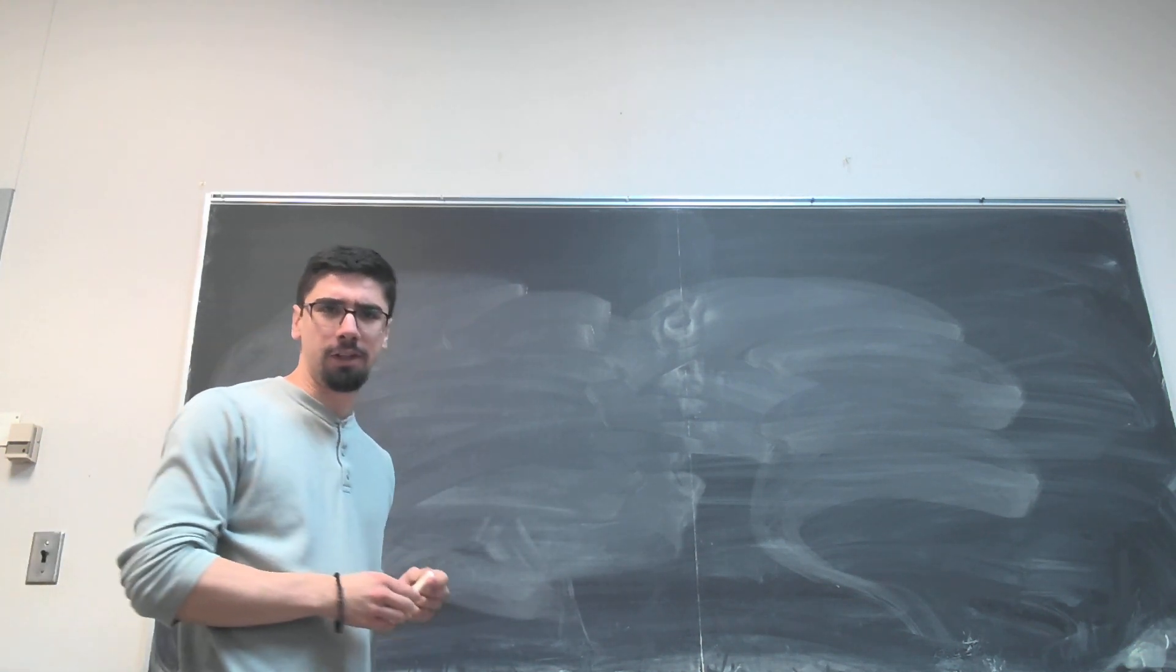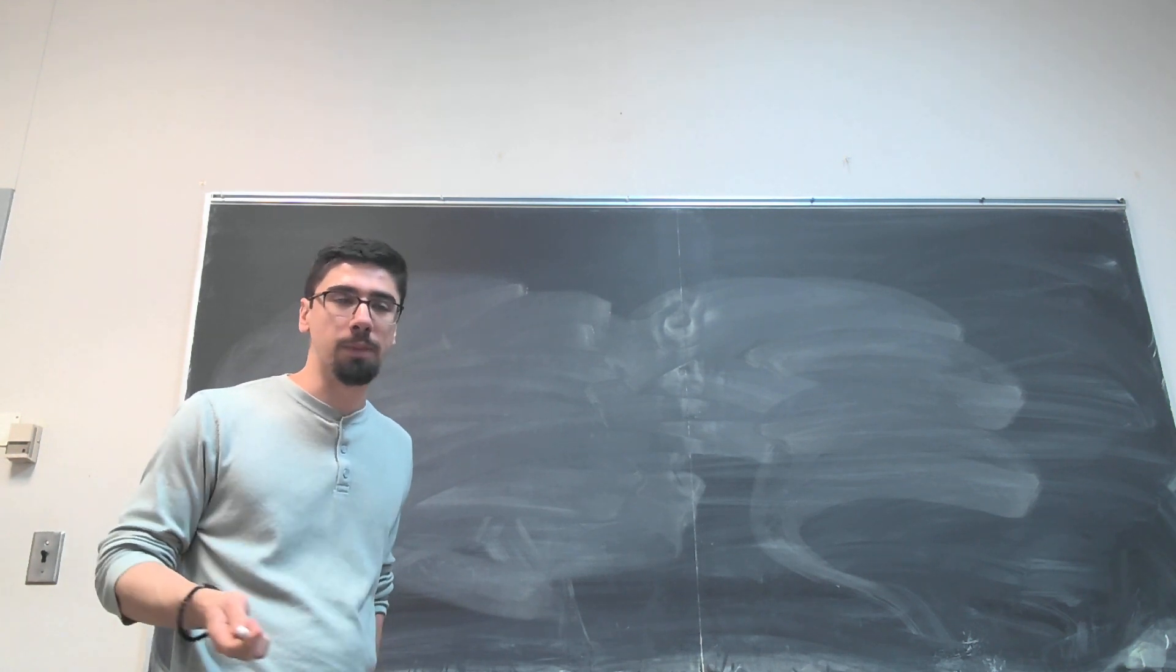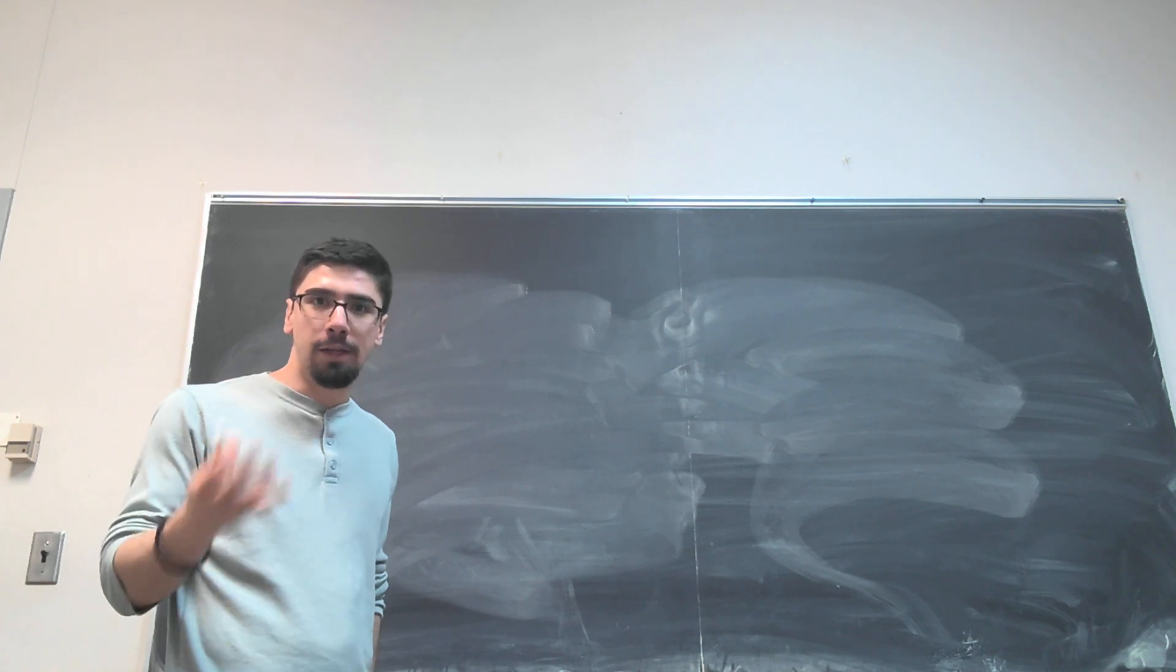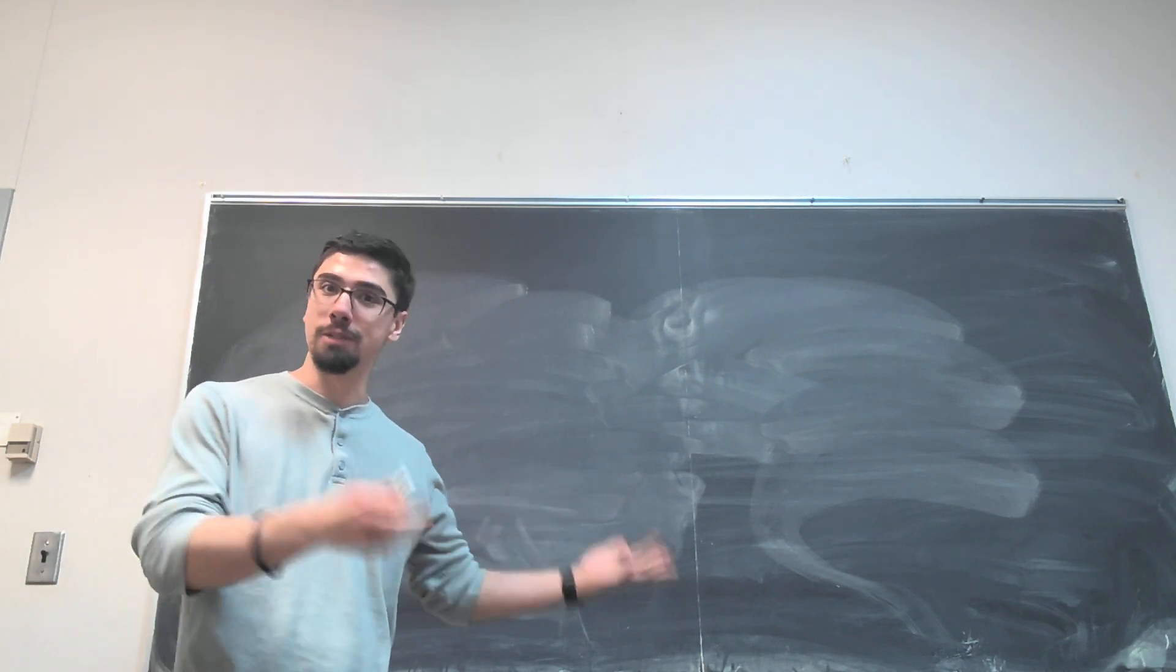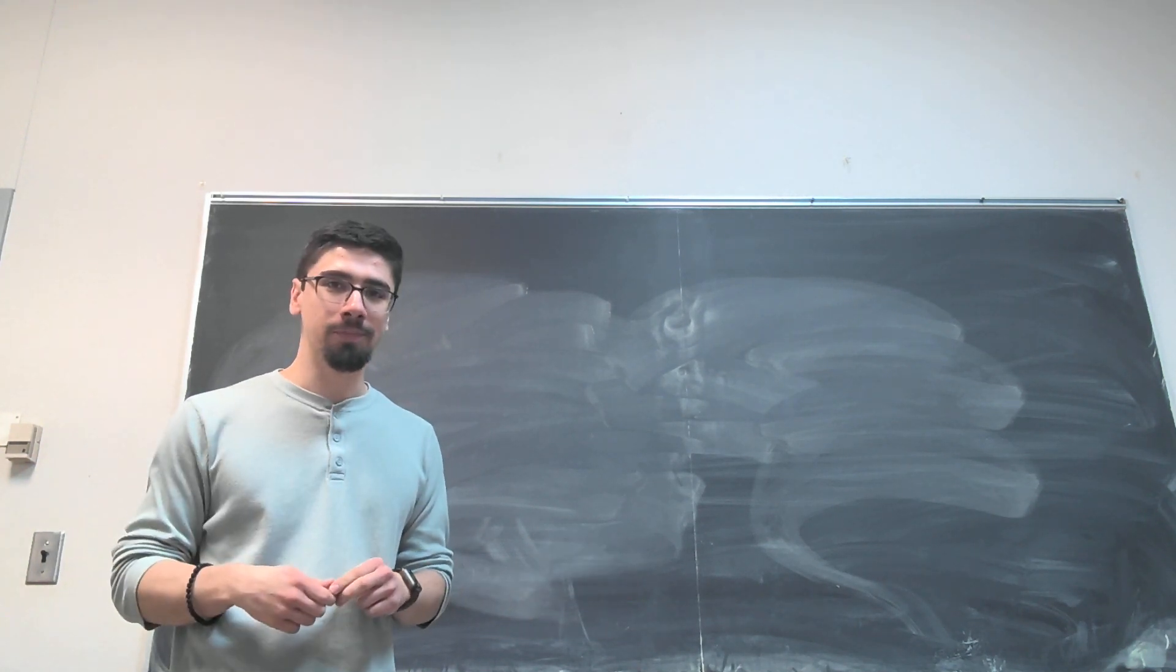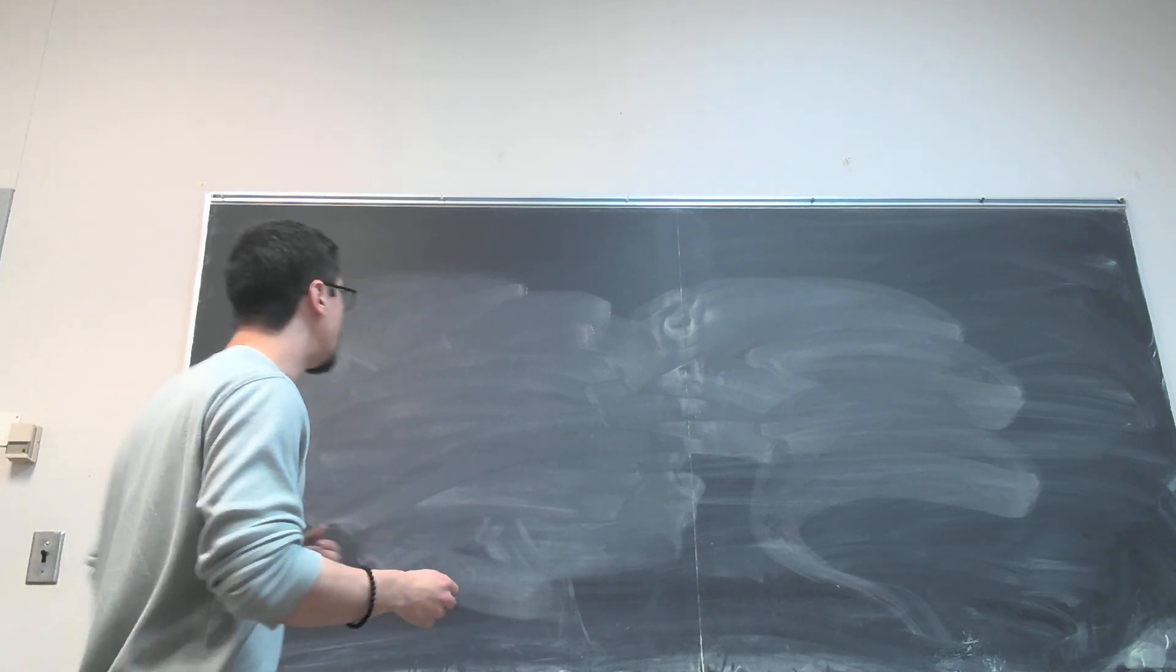I really like this construction because the first one I ever saw of constructing Pythagorean triples was using a number theory algebraic approach, which is fine and all, but I like this thing better because it's inherently geometric and it makes sense that a geometric object would have a geometric construction.